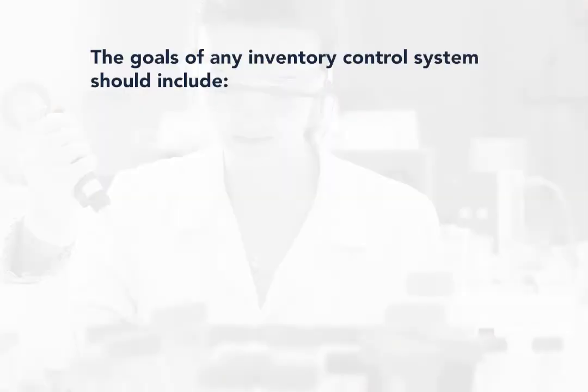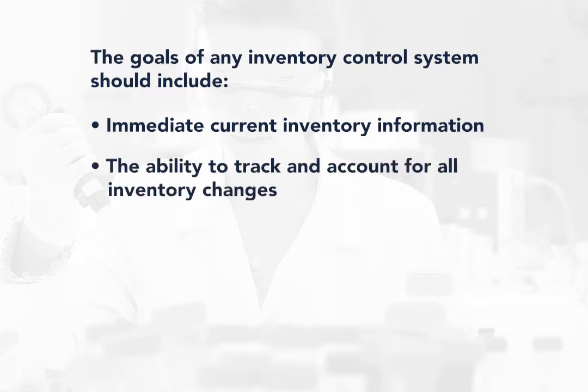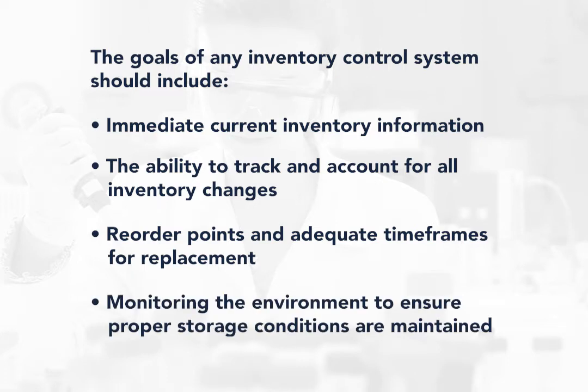The goals of any inventory control system should include always having immediate information about your current inventory, having the ability to track and account for all inventory changes, having adequate reordering points and realistic timeframes for replacement, and finally to have a system in place to monitor the environment to ensure proper storage conditions are maintained.